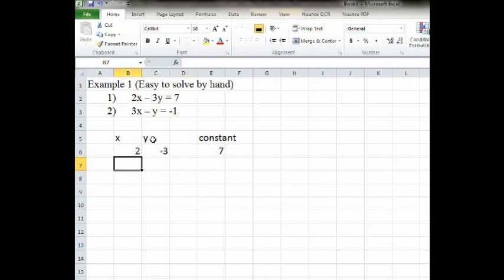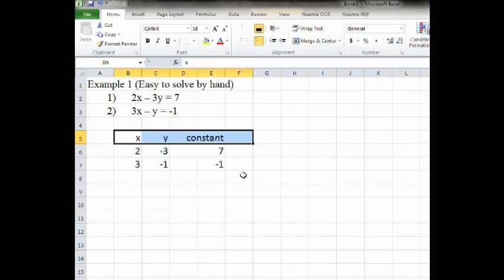Likewise, for the second equation, we do three, negative one, and the constant is also negative one. And I'm going to do one other thing just for cosmetic purposes. I'm going to take these labels and make them right justified. That way they look a little better for appearances there.